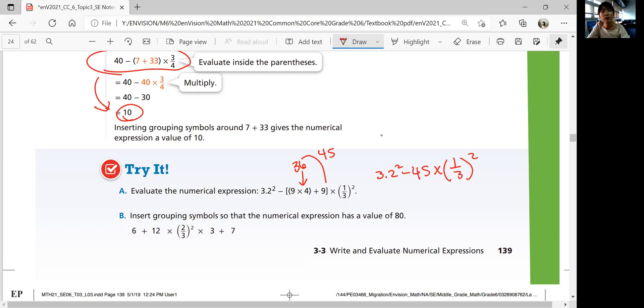You do the powers. 1 third power of 2 is what? 1 third times 1 third, which is 1 over 9.